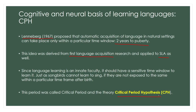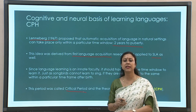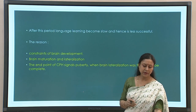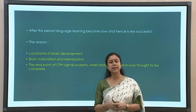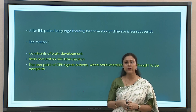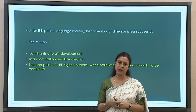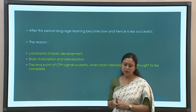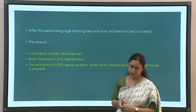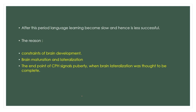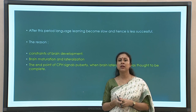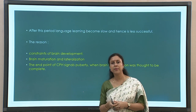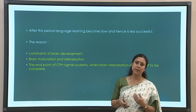This particular time window that Lenneberg talks about later came to be called the critical period hypothesis. The period is called the critical period. There is some disagreement among scholars — some prefer to call it a sensitive period rather than a critical period — but the claim remains the same: there is a time window for humans to master language, beyond which it becomes very difficult. The theory was based on neural development, specifically brain maturation and brain lateralization.